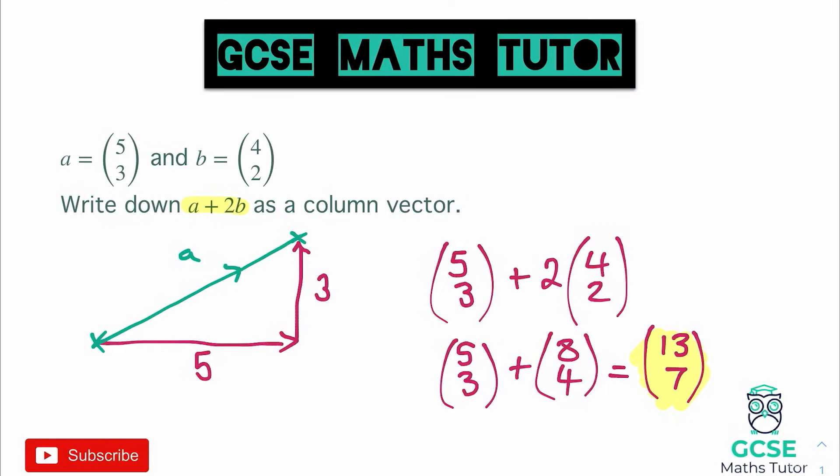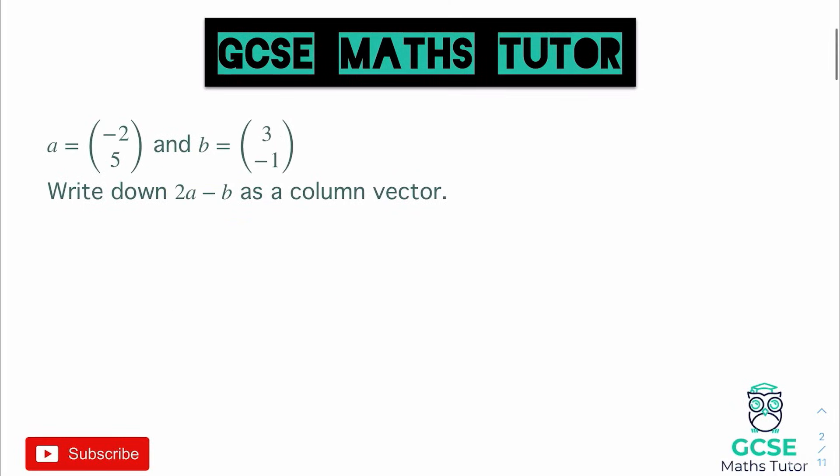Let's have a look at one where we've got some negatives involved. We've got a negative on the top of A and a negative on the bottom of B — that indicates a left movement of 2 for vector A and a downward movement of 1 for vector B. It wants us to write down 2A minus B as a vector.